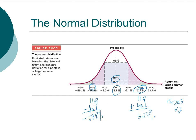Lastly, for a normal distribution, there is a 99% chance that in any given year the return will be between minus three standard deviations and plus three standard deviations. You can pause the video now and go ahead and verify that the 72.7% and minus 49.1% figures come from applying this rule.